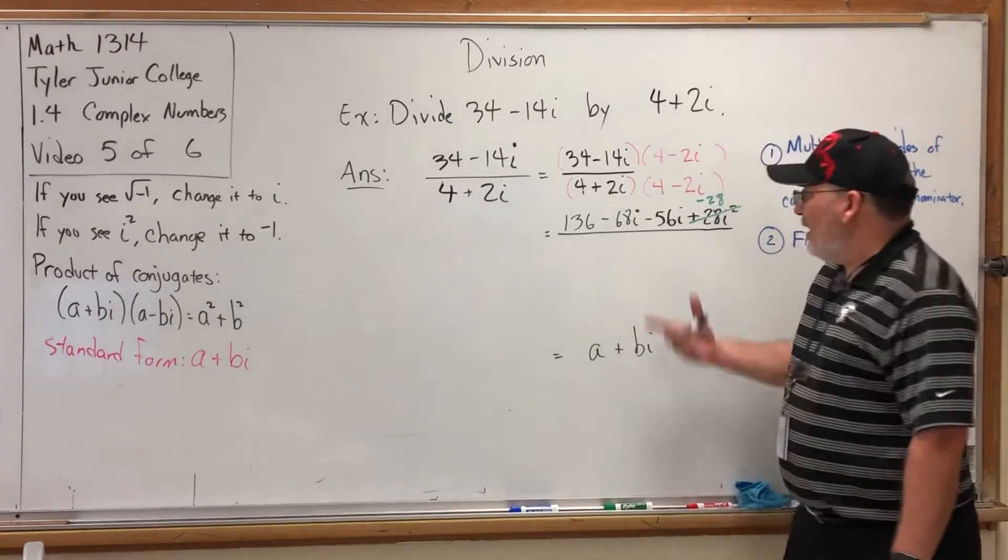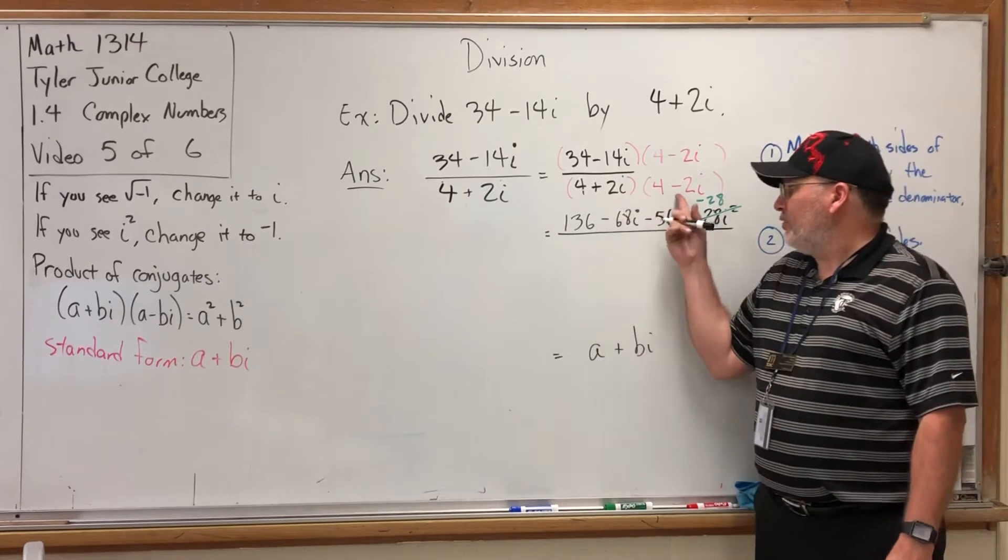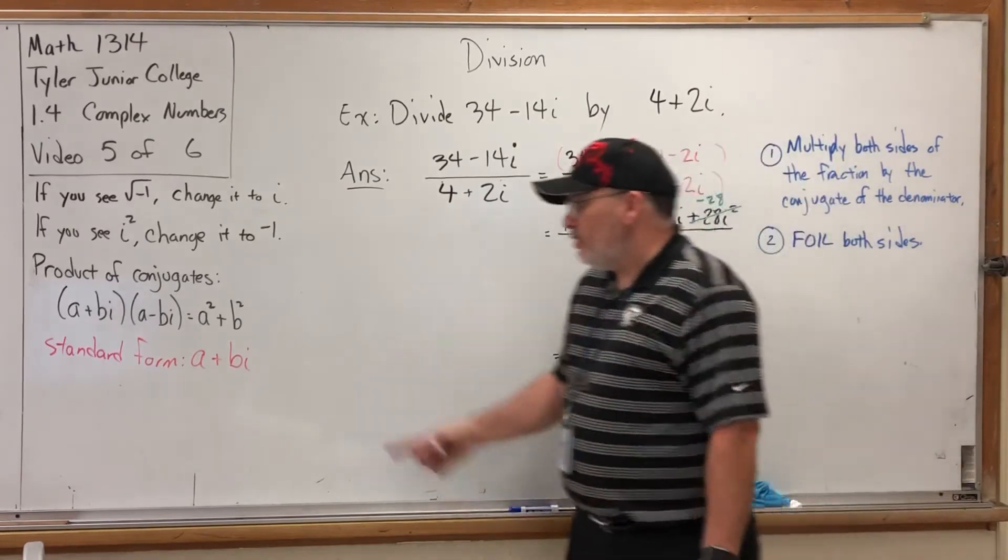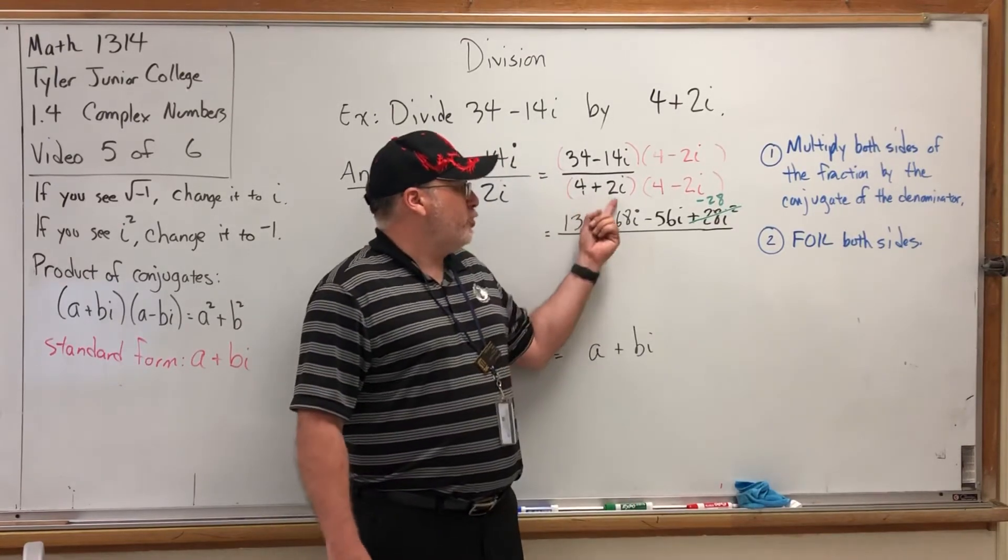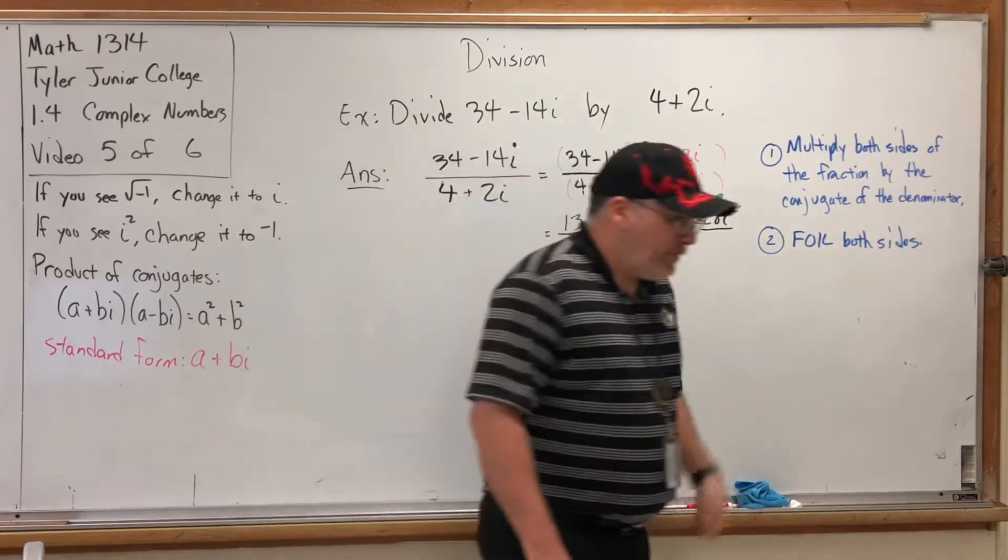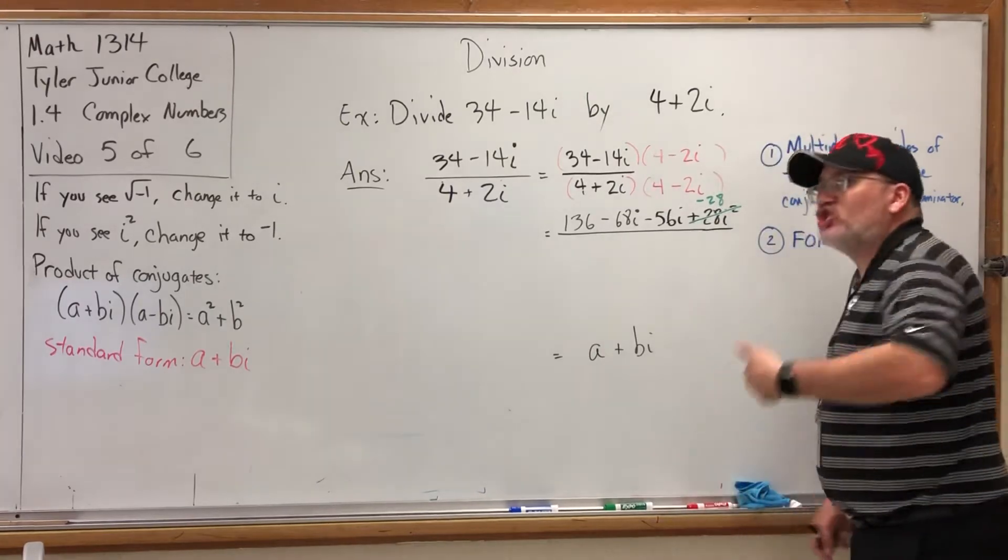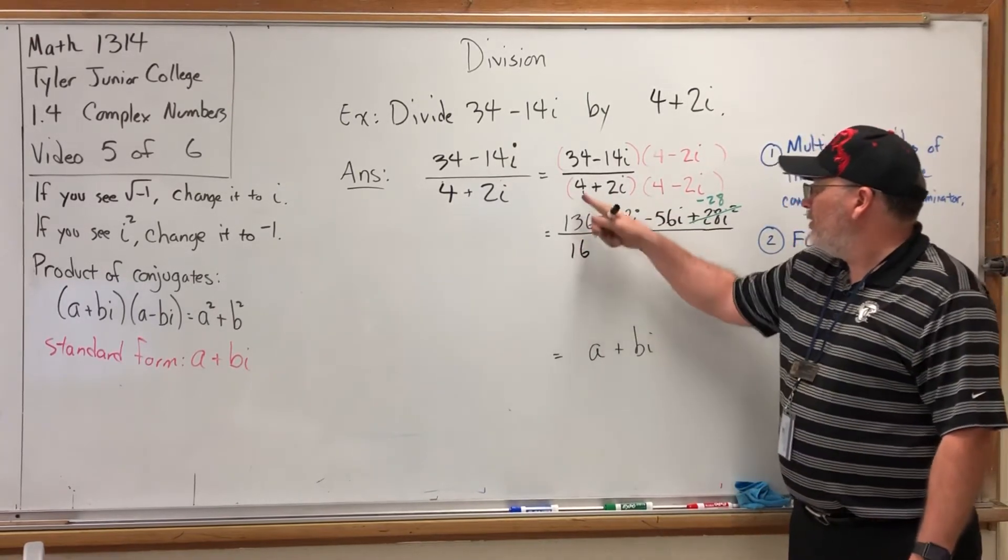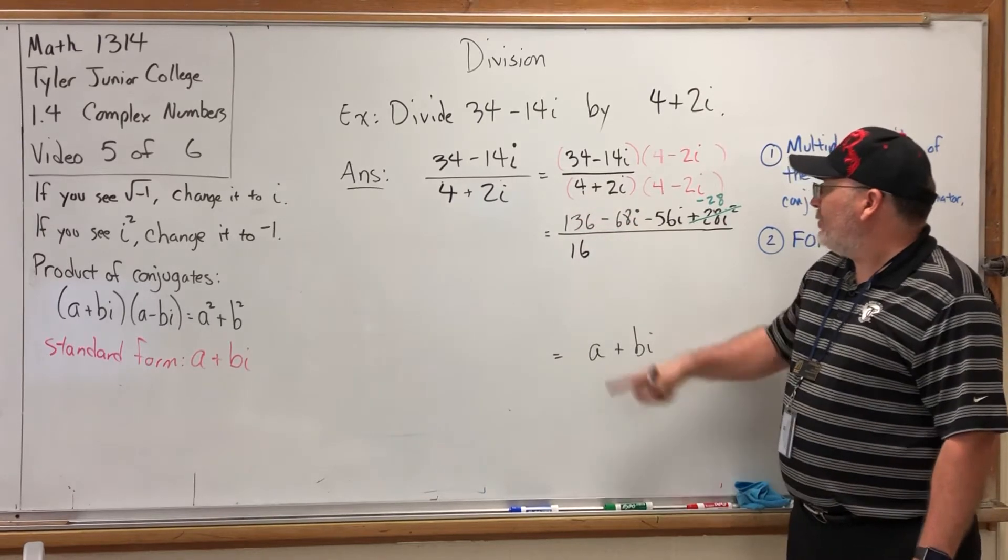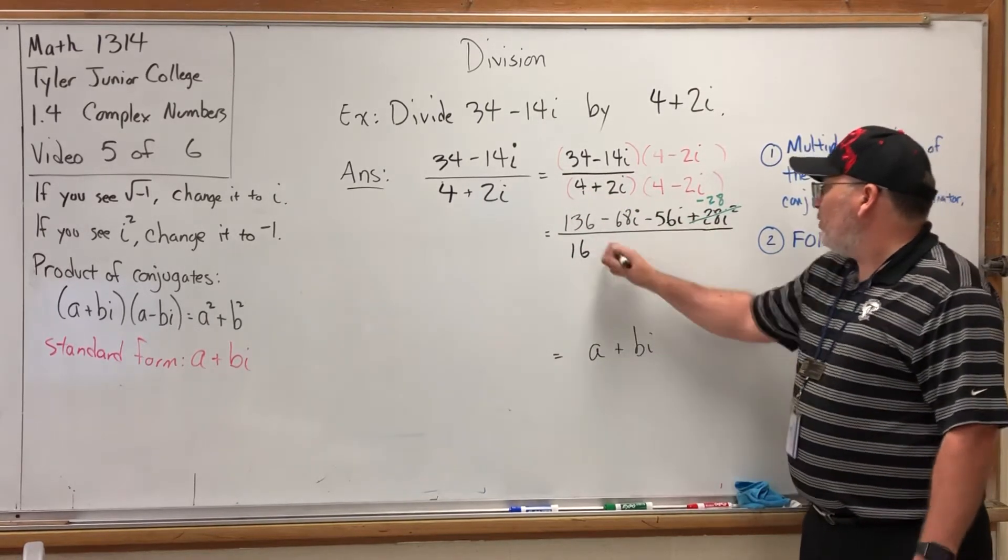Now for the denominator, we're just multiplying a complex number times its conjugate, so you can just use this shortcut which says square the 4, square the 2, and add them. But if for some reason you forget that, just FOIL it. 4 × 4 is 16 for the first. For the outer: 4 × -2i is -8i.